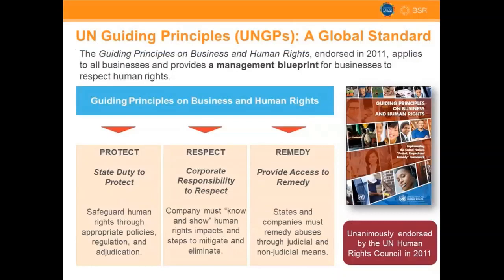The UN Guiding Principles on Business and Human Rights were passed in 2011 and provided a blueprint for companies to start engaging in the conversation around respecting human rights. For 70 years it had primarily been countries that were responsible for protecting people's human rights. What we're focused on here is the corporate responsibility to respect — adopting a policy, making sure people know about human rights, and conducting due diligence on business partners and your own operations. What kinds of issues come up during that due diligence for a consumer goods company? That is the focus for today.